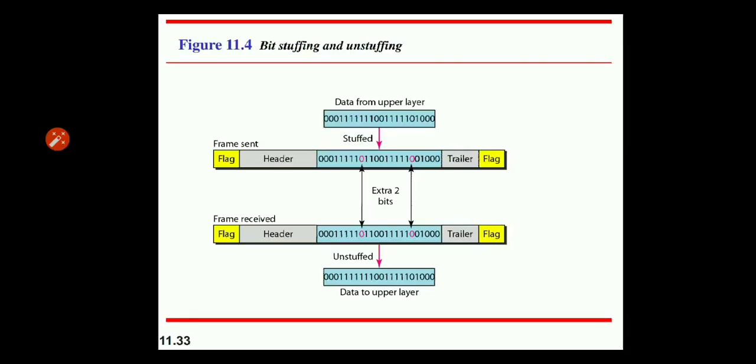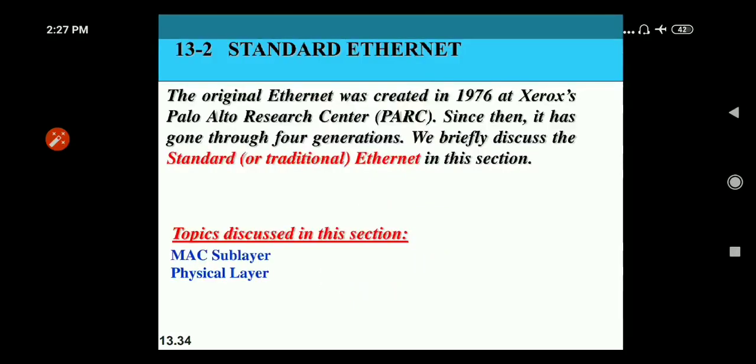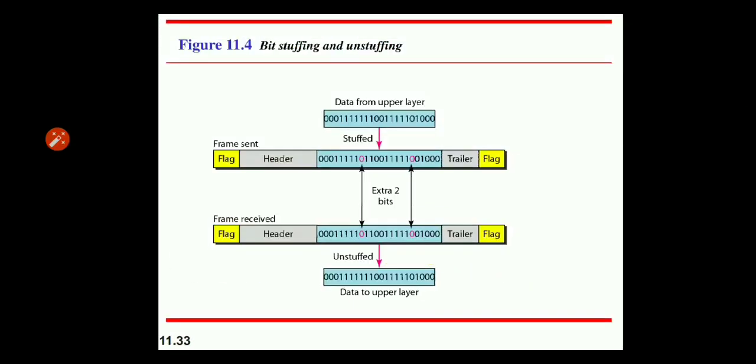Bit stuffing is the process of adding one extra zero whenever five consecutive ones follow a zero in the data, so that the receiver does not mistake the pattern for a flag.